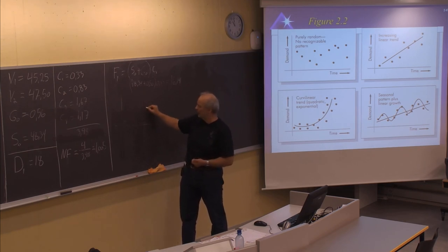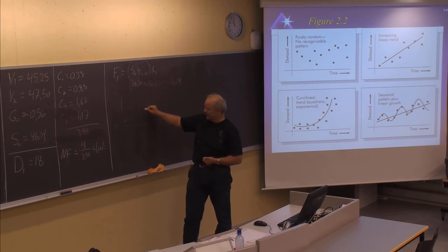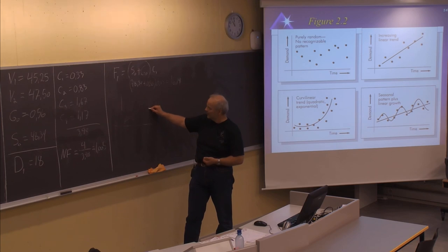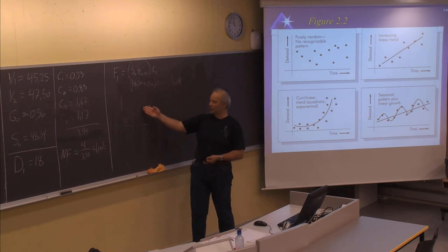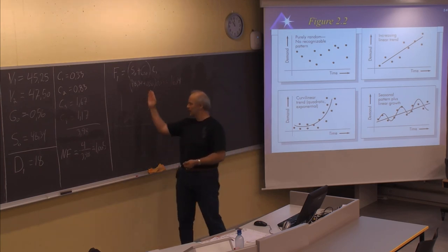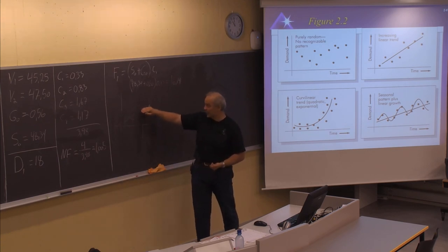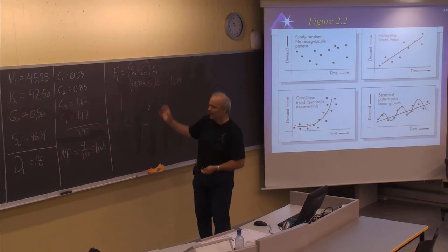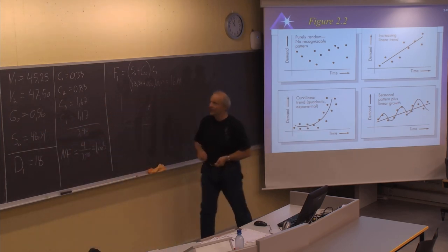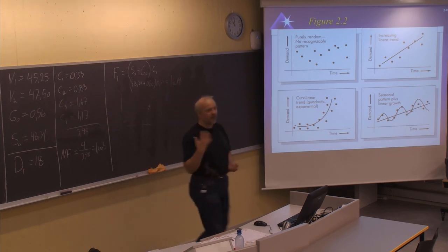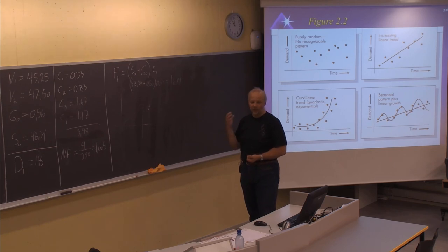We assumed the trend would continue and there would be a low season, so the forecast was 16.14, but actual sales were 18. This means we need to adjust the series, because the trend is actually increasing more than we expected. We need to update the values of the series, the gradient, and also adjust the seasonal factor for this period.